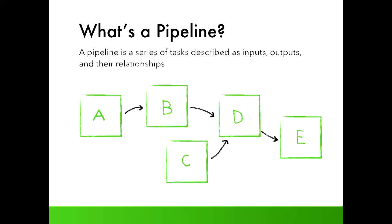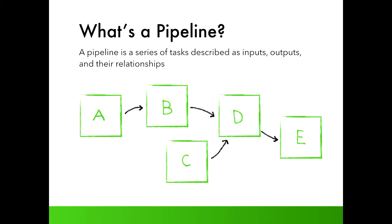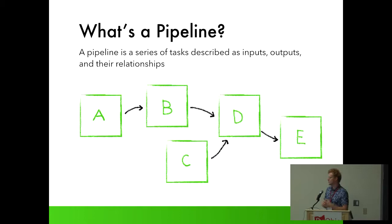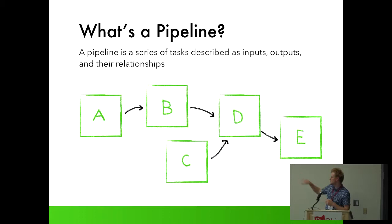A pipeline is a series of tasks described as inputs, outputs, and their relationships. A pipeline is essentially this dependency graph you see here. Each box is a task and each black arrow is an input or output depending on the perspective of the task. Task A produces an output required by B, which produces an output required by D, and so on. Task D will not be able to run until tasks B and C have been completed. Luigi will help you build these dependencies and manage kicking off these tasks for you.